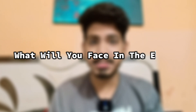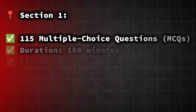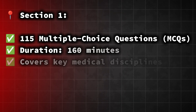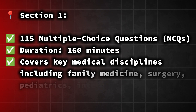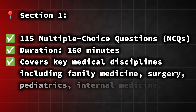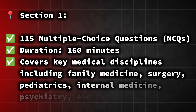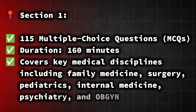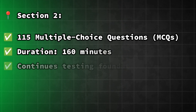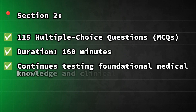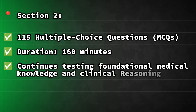Let's talk about the structure — what will you face in the exam? It's a one-day exam divided into two sections. Section 1 contains 115 multiple choice questions with a duration of 160 minutes and covers key medical disciplines including family medicine, surgery, pediatrics, internal medicine, psychiatry, and OBGYN. Section 2 also contains 115 multiple choice questions with a duration of 160 minutes and continues testing foundational medical knowledge and clinical decision-making.